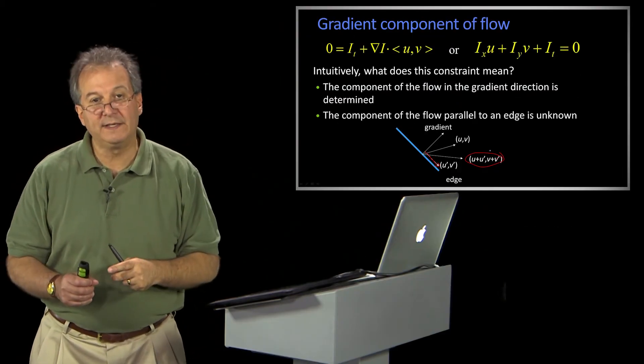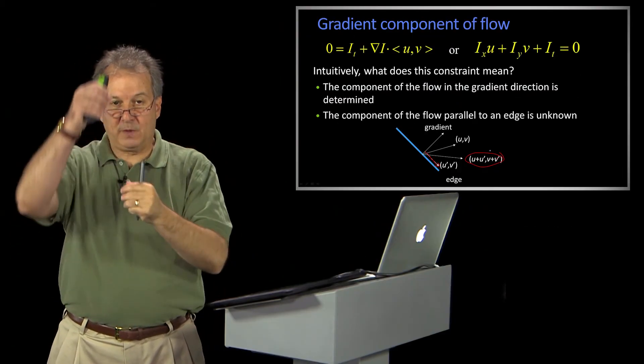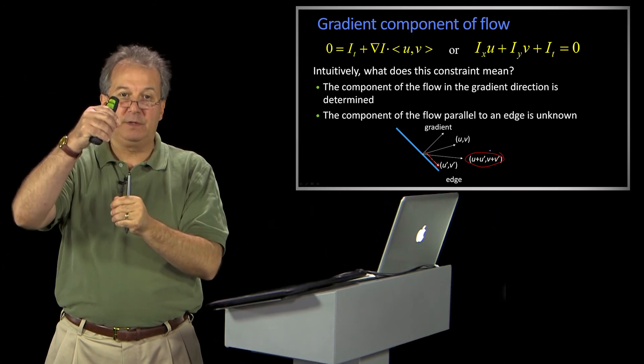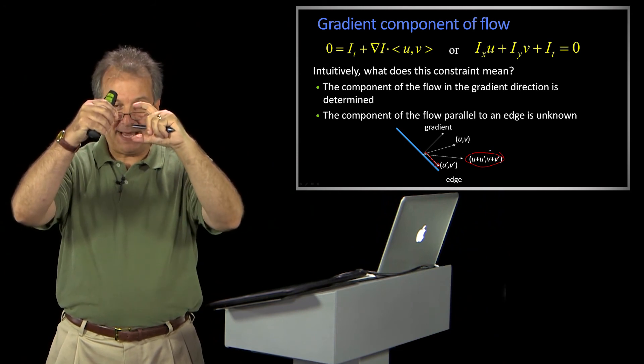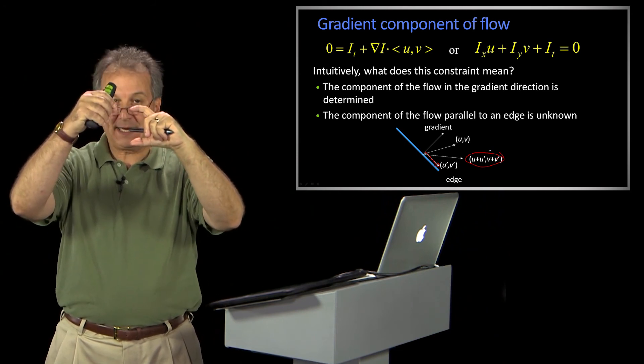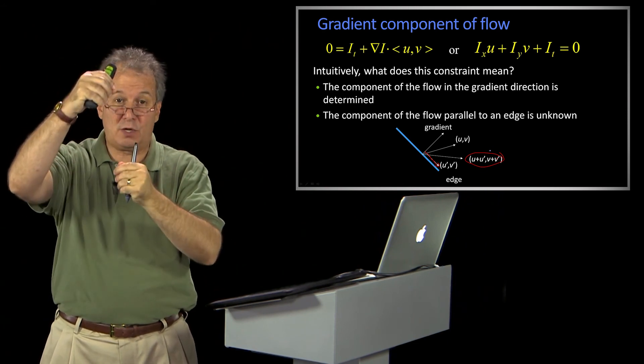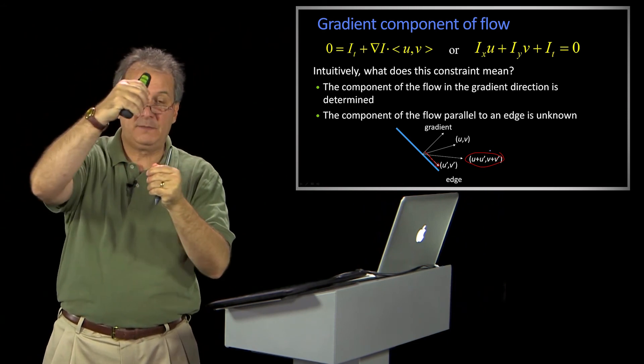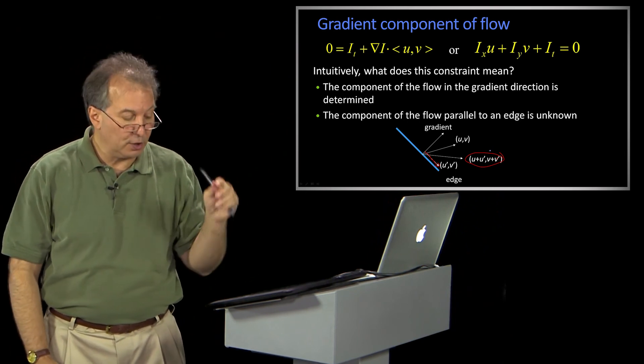Remember when we were doing corner finding, and we put up a thing, and we said, well, if you slide it up and down, if your little patch is on the edge of the black square, if we slide it up and down, we can't tell at all. We can only tell how much is being moved perpendicular to the edge. That's what's going on here.